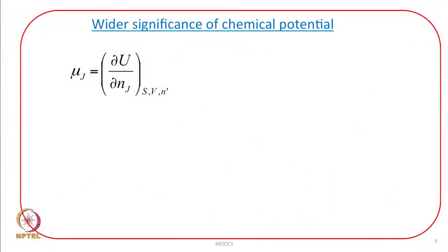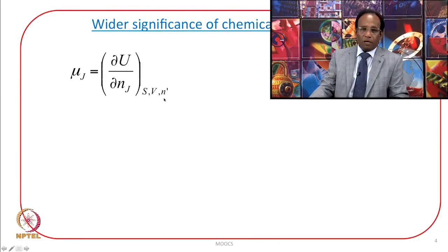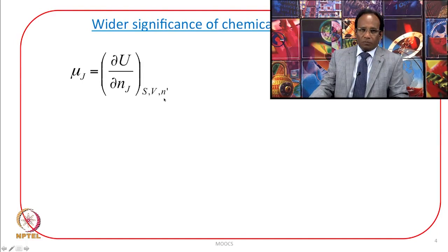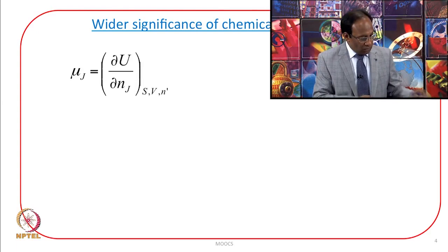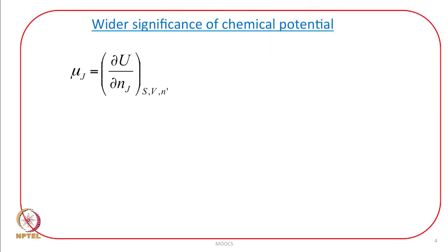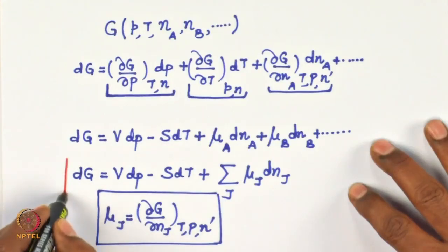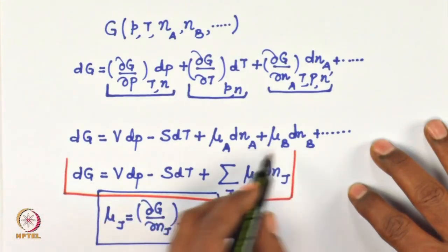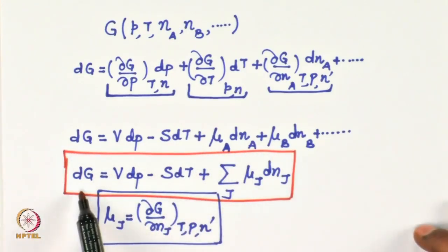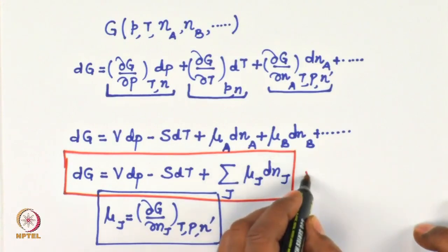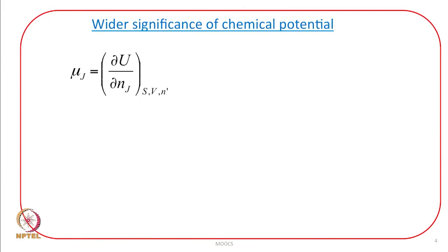The chemical potential can be expressed as the partial derivative of internal energy with respect to N_j under constant entropy, volume, and N-prime conditions. It is straightforward to derive this. We keep in mind the key equation: dG = V dP − S dT + Σ_j μ_j dN_j, which we will use repeatedly.